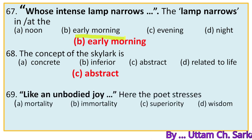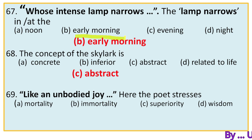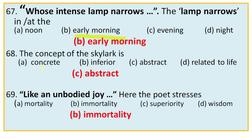Question 69: 'Like an unbodied joy whose race is just begun.' Here the poet stresses — options are mortality, immortality, superiority, wisdom. 'Unbodied' means without body, not made of blood and flesh — that is, a spirit, which equals immortal. So the poet stresses immortality. The right option is B, because according to Shelley the bird is immortal, and he repeatedly addresses the bird as 'blind spirit,' 'unbodied joy,' etc.